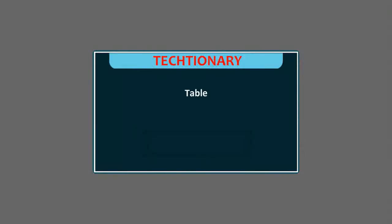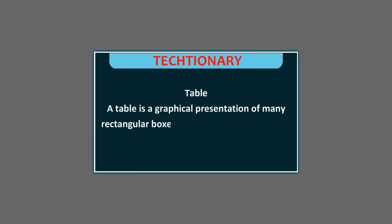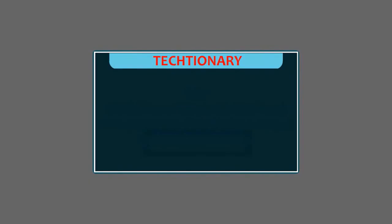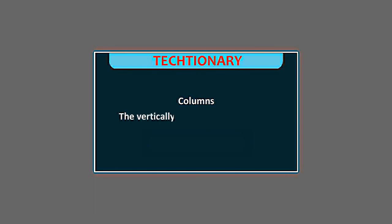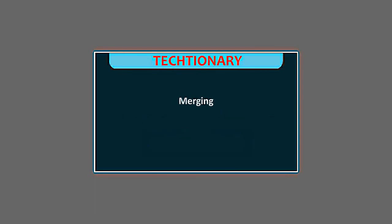Table: A table is a graphical presentation of many rectangular boxes, called cells, that are aligned horizontally and vertically. Rows: The horizontally arranged cells are called rows. Columns: The vertically arranged cells are called columns. Merging: Combining two or more cells to create one big cell.